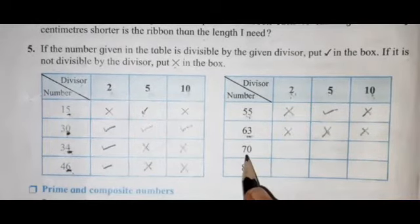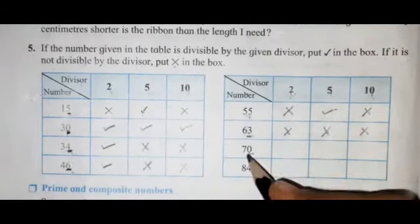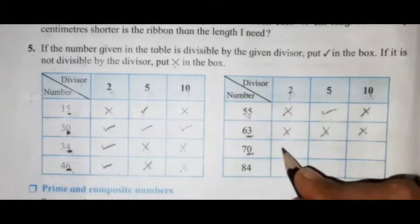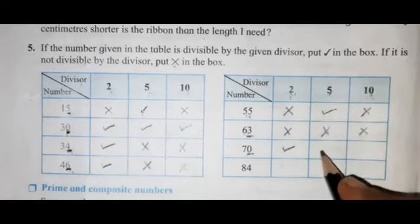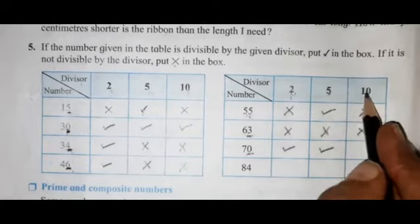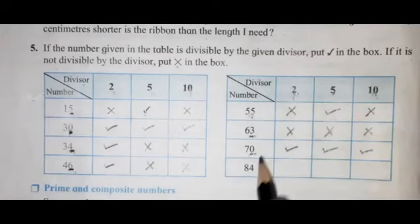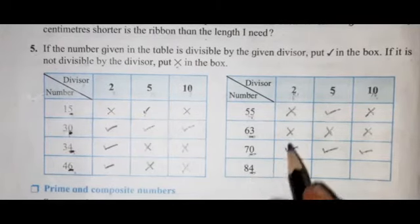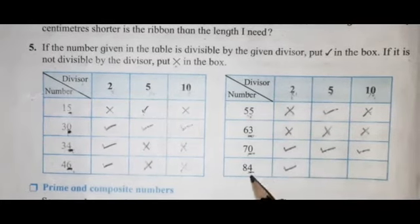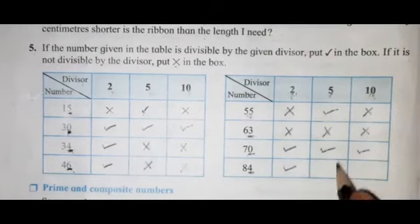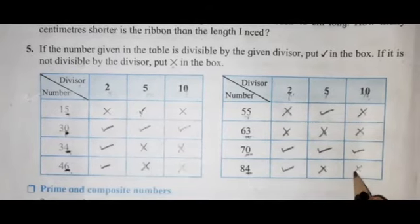Next number is 70. The unit place is 0, so 70 is divisible by 2 — put tick. 70 is divisible by 5 — yes. 70 is divisible by 10 — yes. Next number is 84. The unit place is 4, so 84 is divisible by 2 — put tick. Is 84 divisible by 5? No. Is 84 divisible by 10? No — put cross.